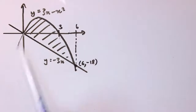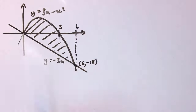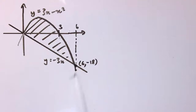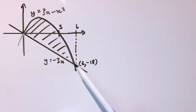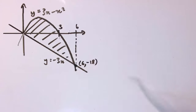In this question I want to find the area between these two curves, or this curve and this straight line: y equals 3x minus x squared, and y equals minus 3x. The first thing to note is they meet here at the point (6, -18). We're not going to check that in an exam question, but you might have to work out where they intersect to carry on with this problem.